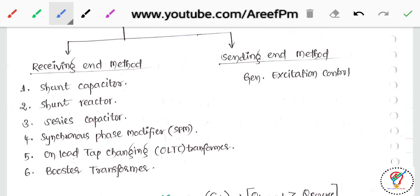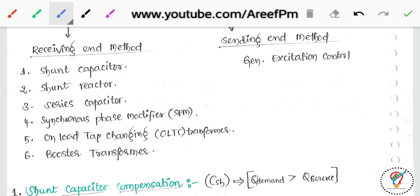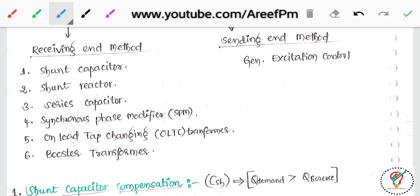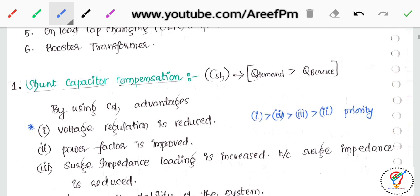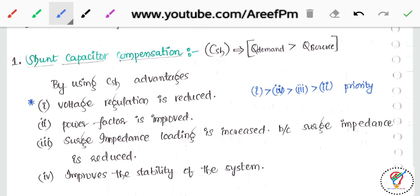The receiving end method means at the terminal we install some compensation devices. The devices are: first, shunt capacitor; second, shunt reactor; third, series capacitor; fourth, synchronous phase modifier; fifth, on-load tap changing transformers; and sixth, booster transformers. These are the receiving end methods used to control reactive power, voltage, or power factor. This is a very important topic for competitive exams and interviews.